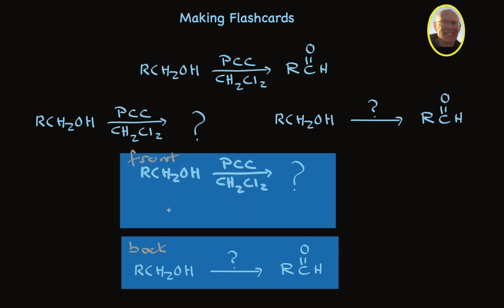And by the way, because details can sometimes be important, you can use the bottom part of the flashcard to fill in details that you might otherwise skip, but it would be good to know. For example, PCC is pyridinium chlorochromate.